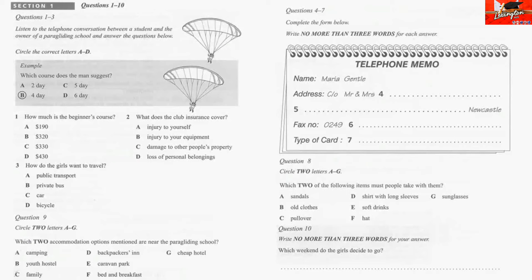What sort of prices are we looking at? The introductory is $190. The beginner's course, which is probably what you'd be looking at, is $320. No, sorry, $330. It's just gone up. And the pilot course is $430.